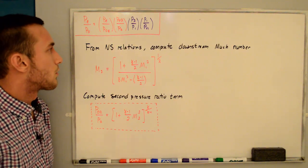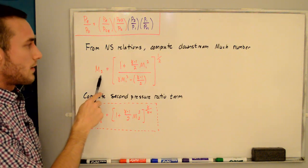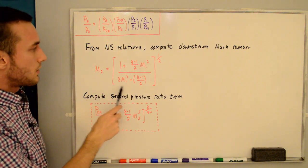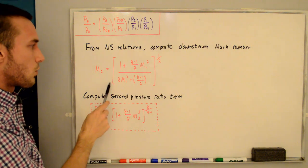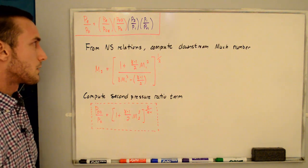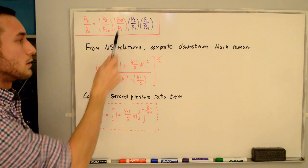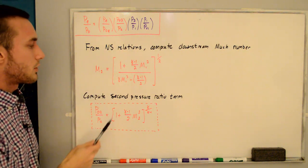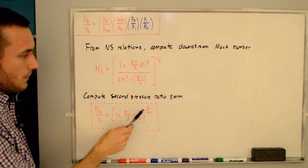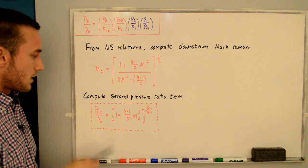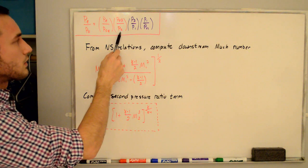We then use the normal shock relations to compute the downstream Mach number M2. From M2 and gamma, we compute the second pressure ratio term P02/P2. Note this does not have a negative exponent because it is stagnation to static, not static to stagnation.